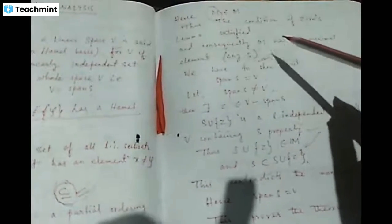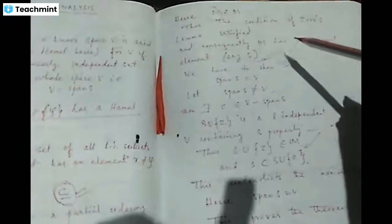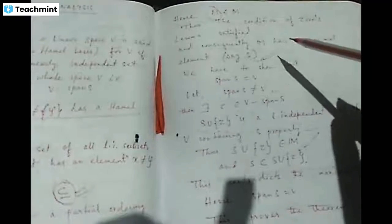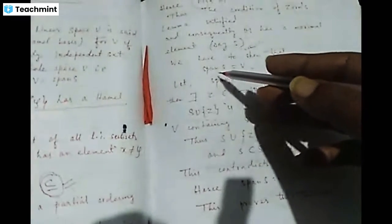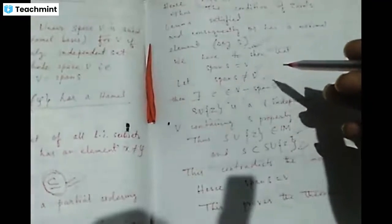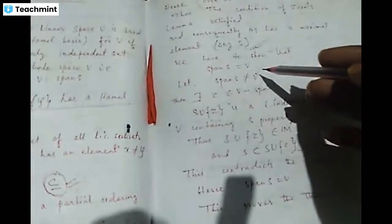All linearly independent sets belong to M, but S is a proper subset of S union {z}. However, we already proved by Zorn's lemma that S is the maximal element and no element larger than S exists. But here we are proving that S union {z} is another element larger than S, which contradicts S being the maximal element. So it cannot be true that span(S) is not equal to V. Therefore, span(S) must equal V.